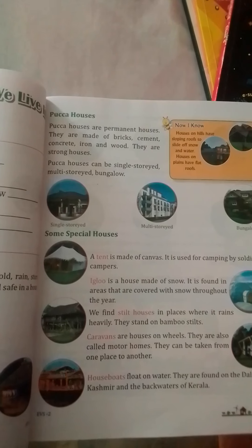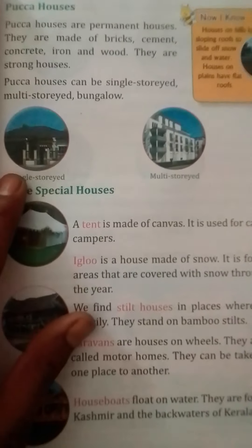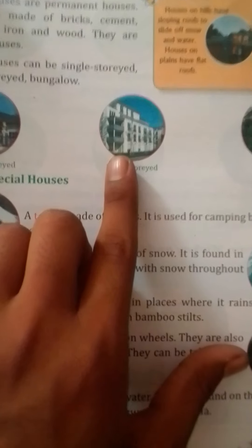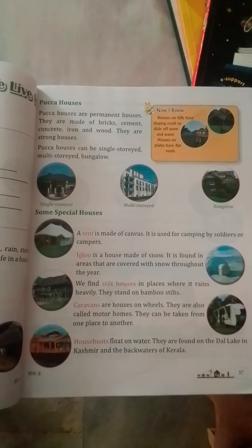Special houses: a tent is made of canvas. It is used for camping by soldiers or campers.